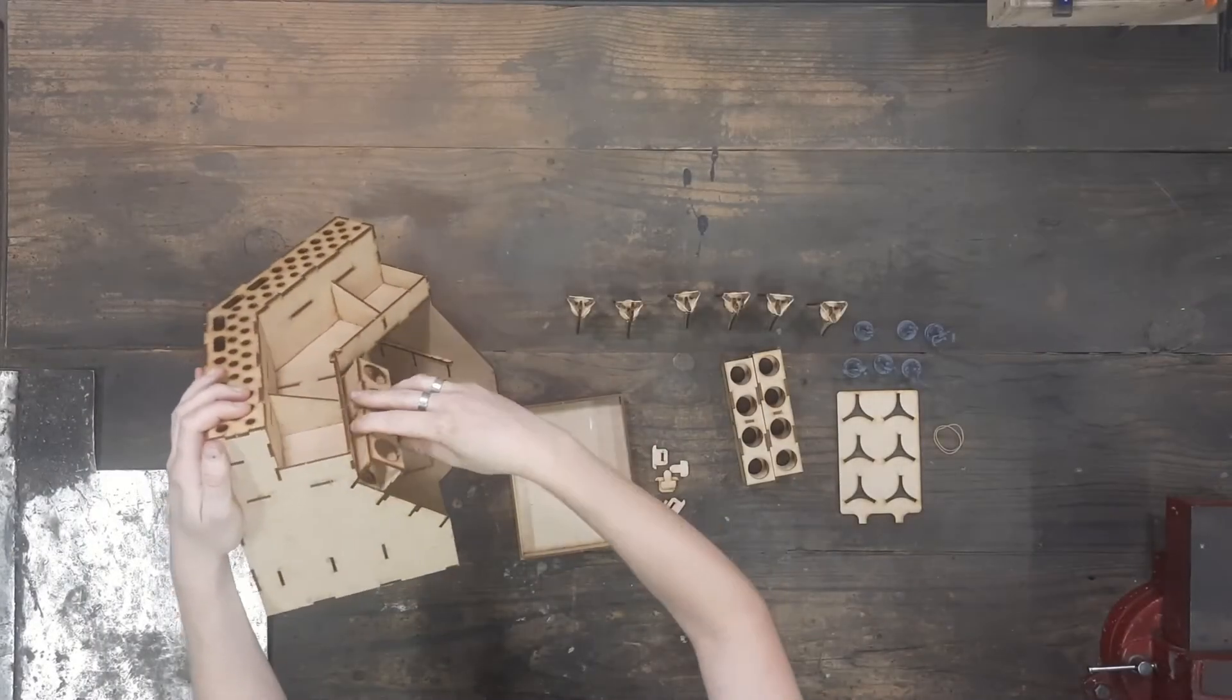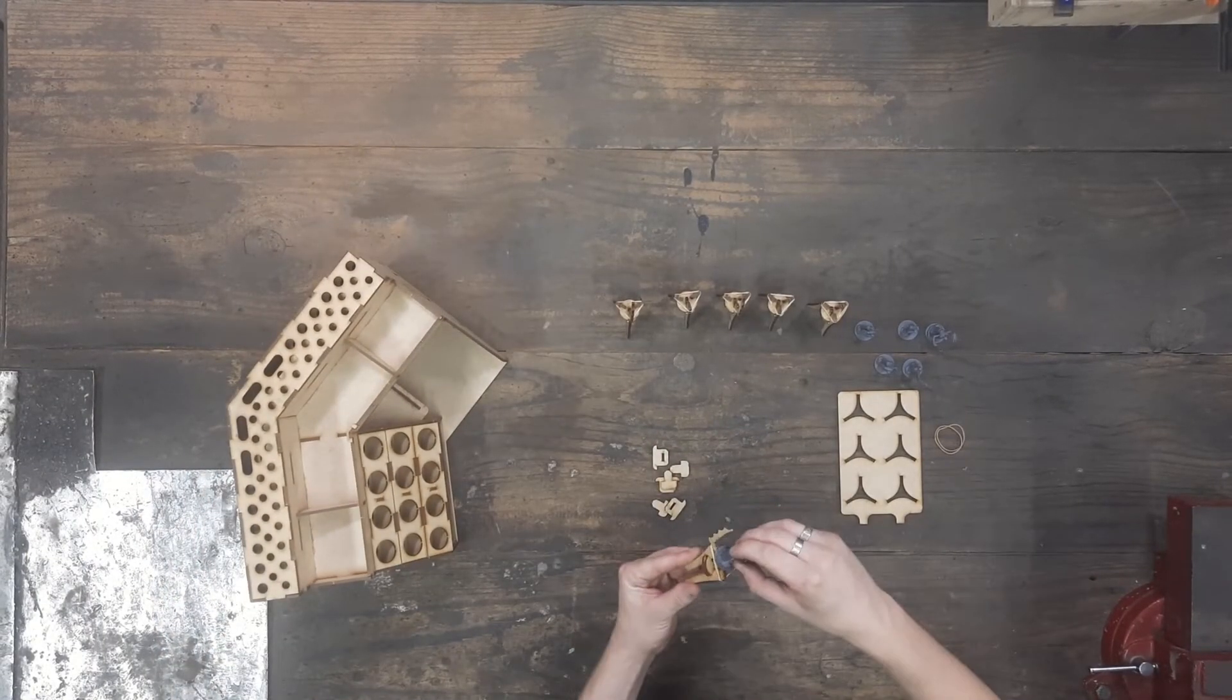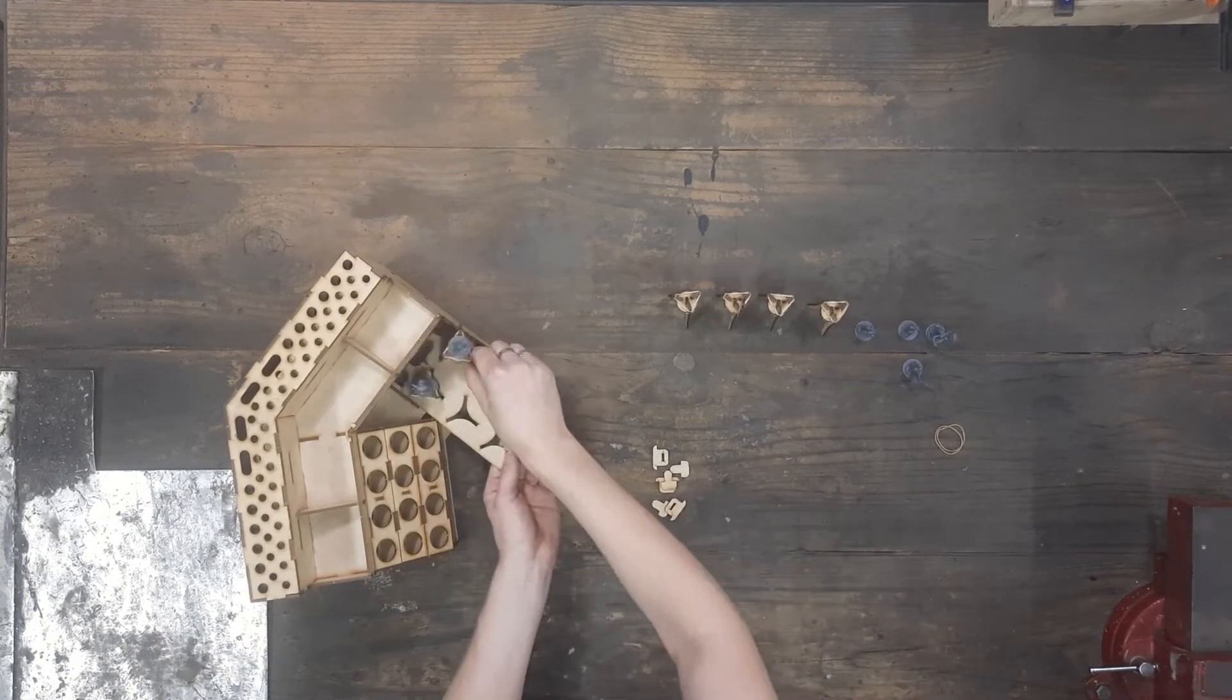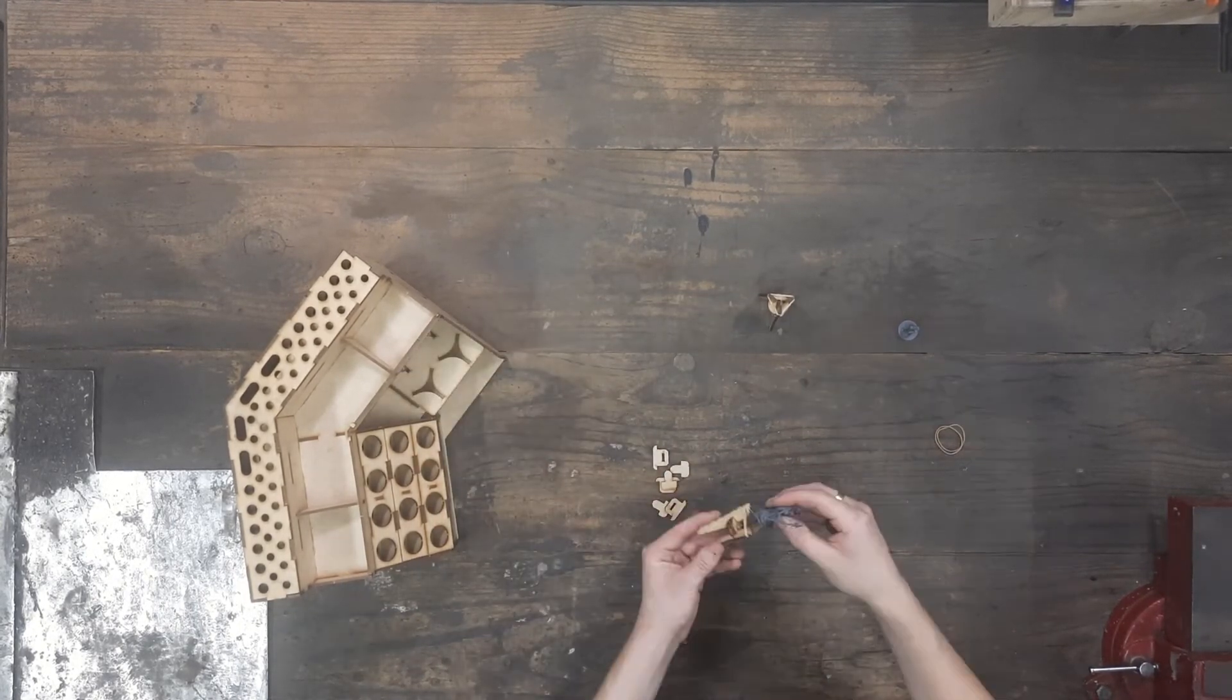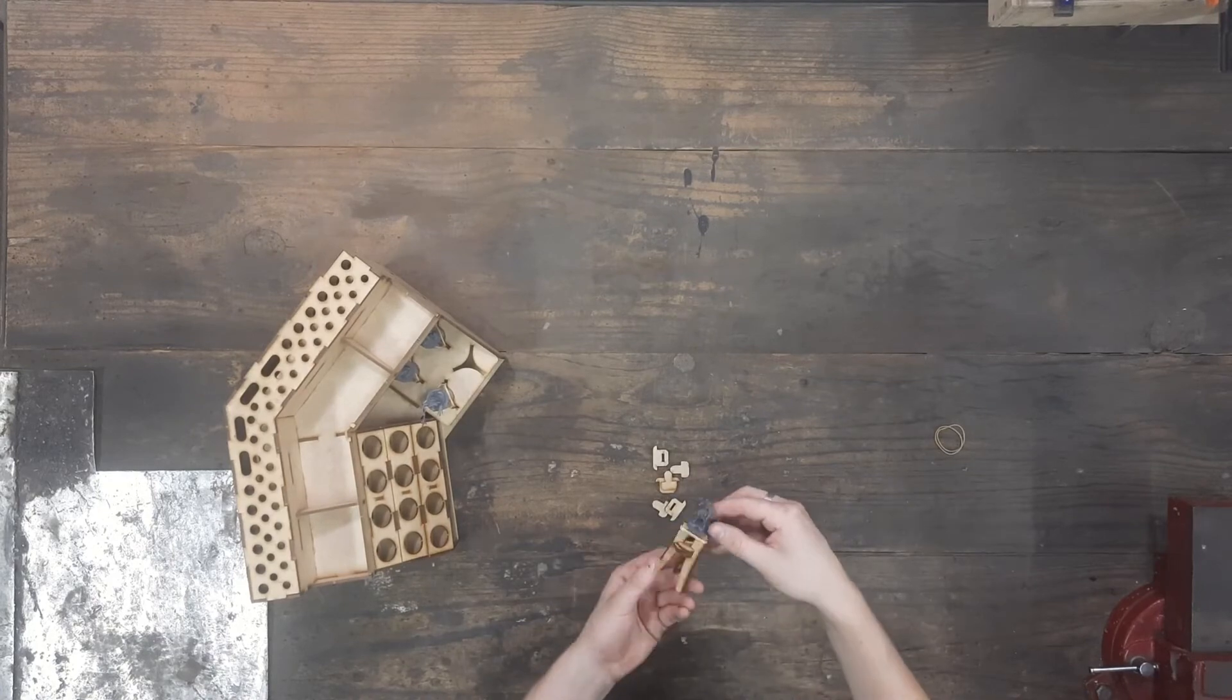When putting in the smaller paint racks you will notice that the longer tabs go at the bottom. This helps keep the individual paint racks together when you take one out lower than a top one.